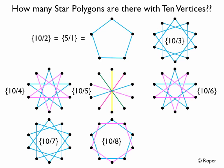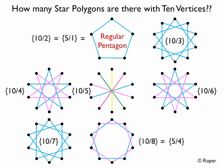The duplicate of 10,2 is 10,8. We can reduce 10,8 down to 5,4, which is again a regular pentagon. So 10,8 is two of these regular pentagons. These are not star polygons with 10 vertices, so we can take these two off the board.